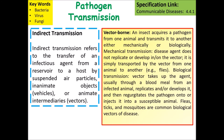Vector-borne transmission is where an insect acquires a pathogen from one animal and transmits it to another, either mechanically or biologically. Mechanical transmission is where the disease agent does not replicate in the vector — it is simply transported. Biological transmission involves the vector taking up the agent, usually through a blood meal, and the pathogen replicates inside the vector before being passed on. The most common example is malaria, carried by mosquitoes.